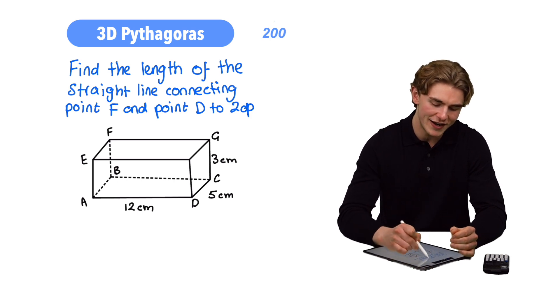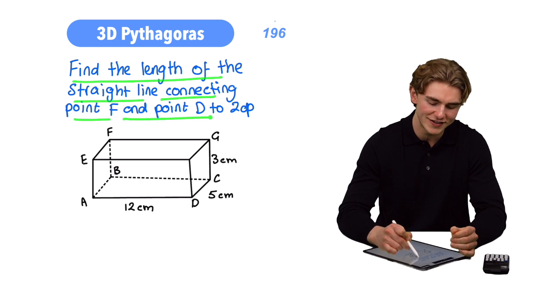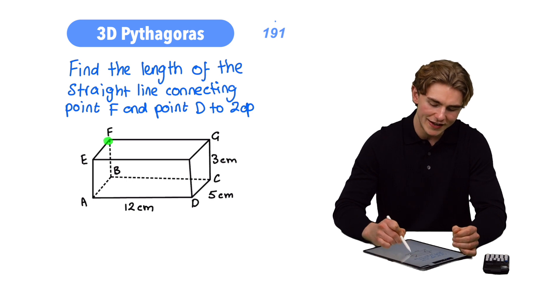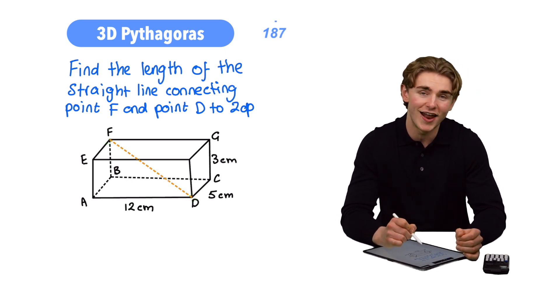The question asks us to find the length of the straight line connecting point F and point D. Where are those going to be? Point F is in the top left-hand corner, and point D down here in the bottom right. Drawing on a straight line to join them, we can draw on that line there.